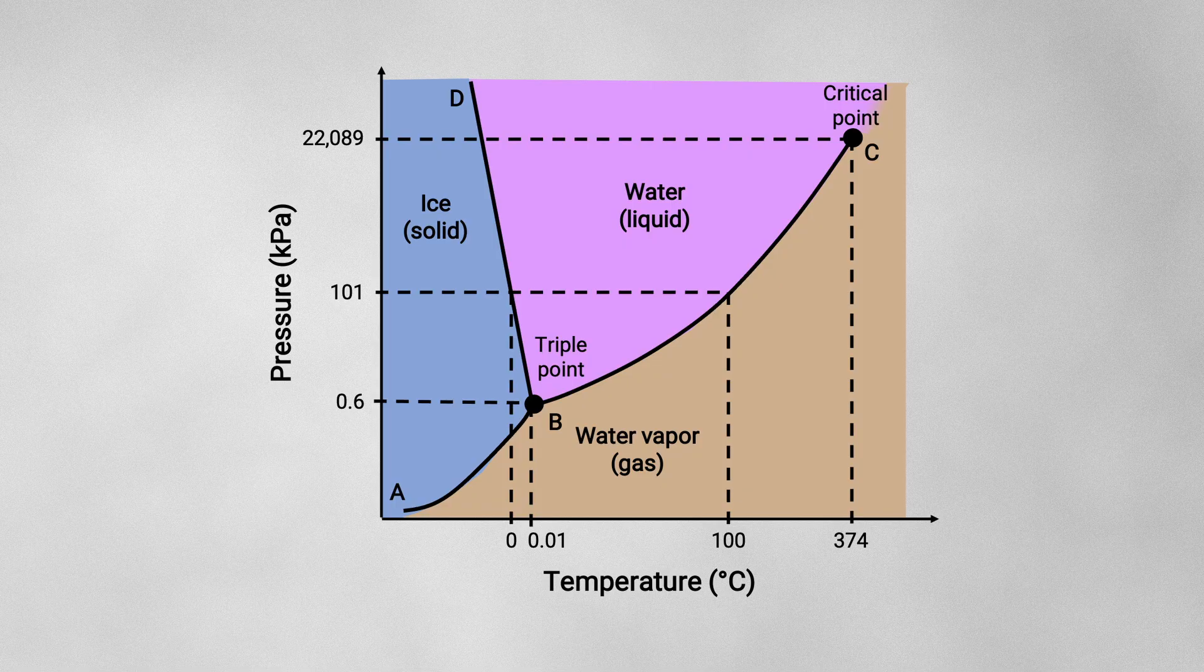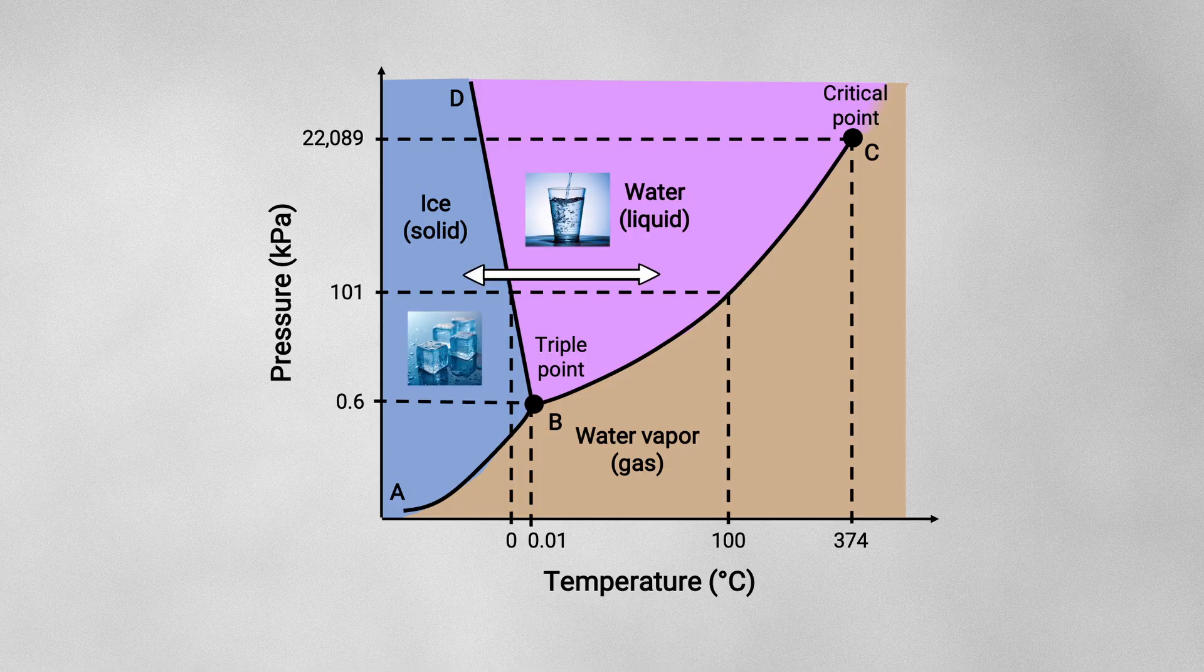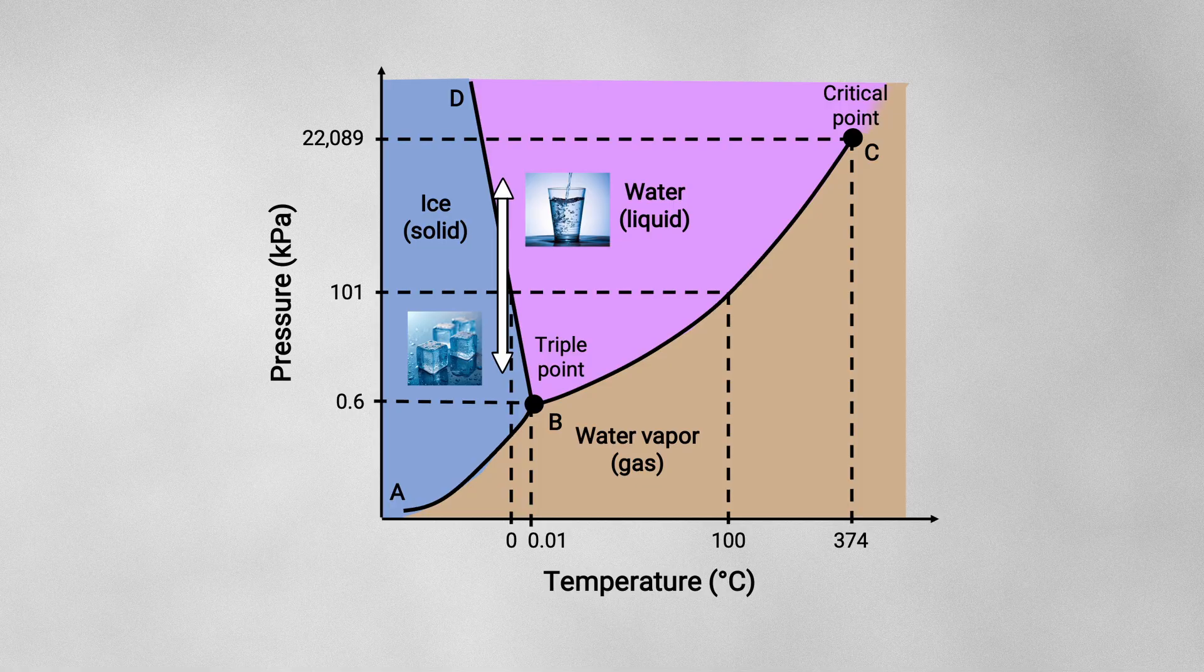Luckily though, just like any phase diagram can tell you, there are always two routes you can take. You could change the temperature, or you could change the pressure and achieve the same thing.